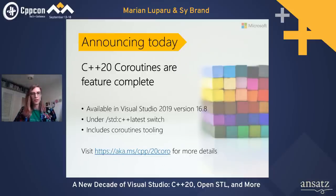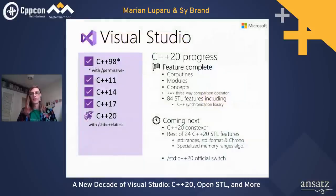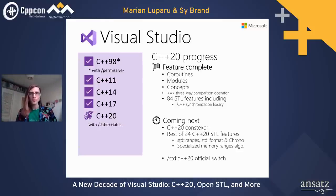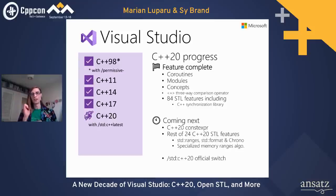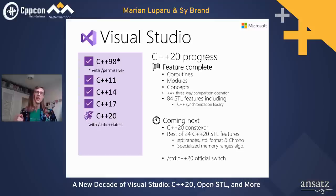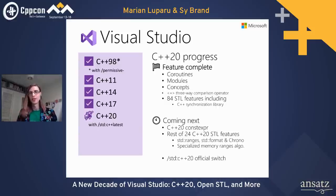We now have feature-complete status for coroutines, modules, concepts, the spaceship operator, and 84 standard library features. We're working to finish C++20 support including all the constexpr changes and the last STL features. When those ship, we'll have a /std:c++20 switch to indicate full feature completeness. Also note that C++17 support no longer has an asterisk — we now have a fully conformant preprocessor.